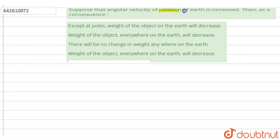angular velocity of rotation of the earth is increased, then as a consequence... Now there are four options, so let's analyze.